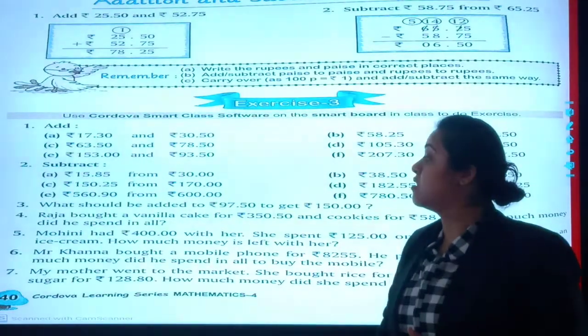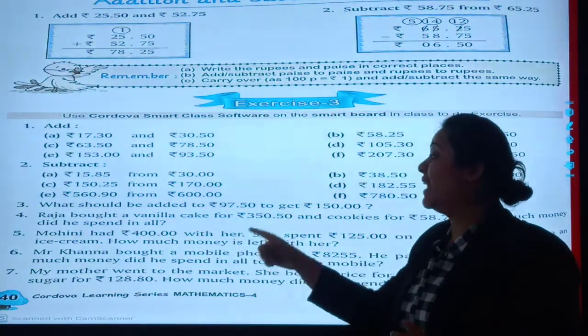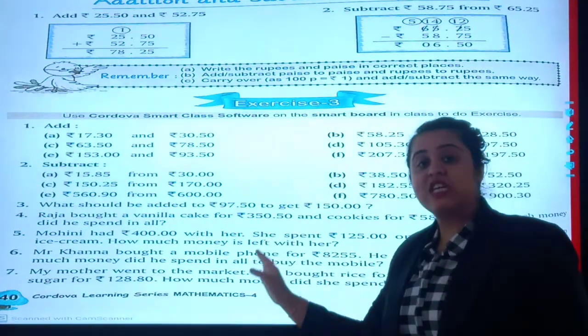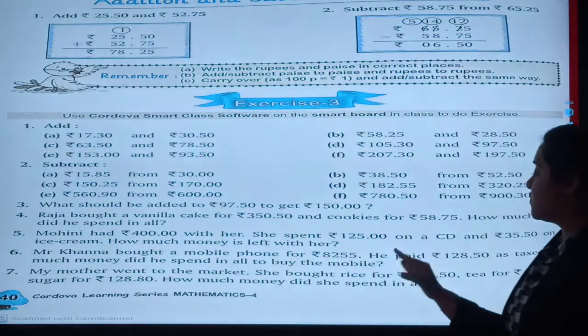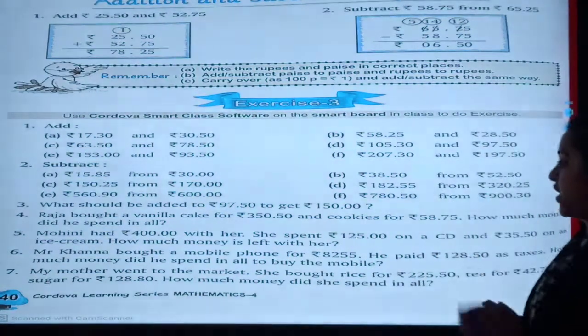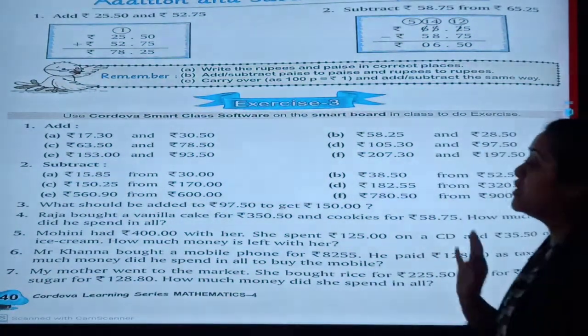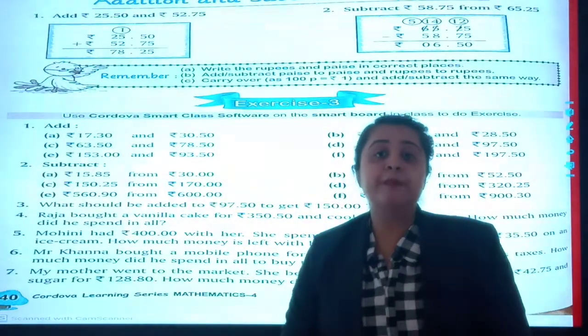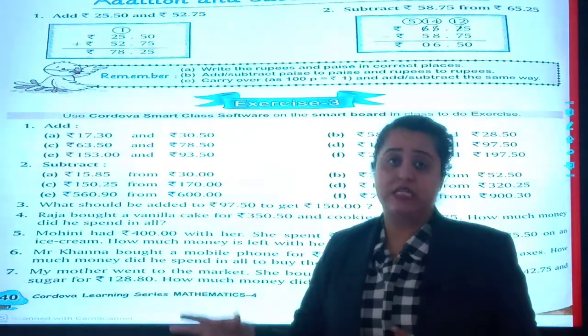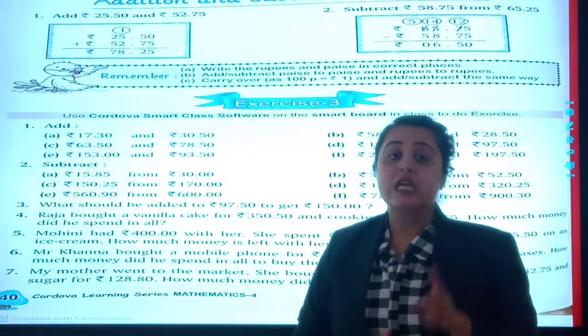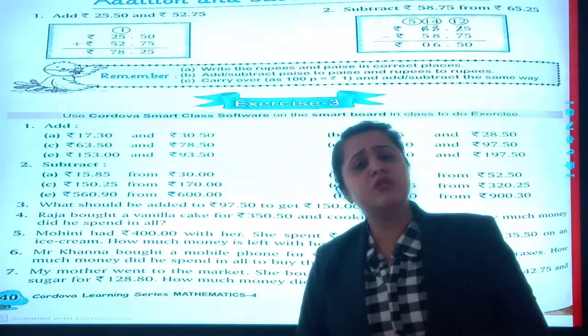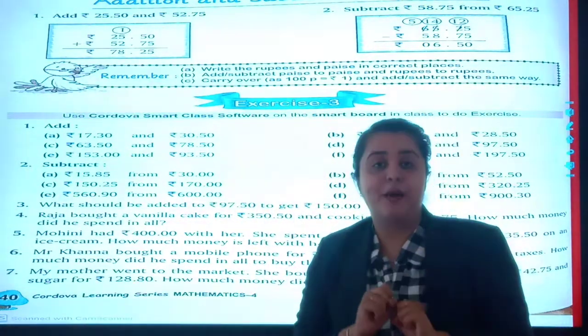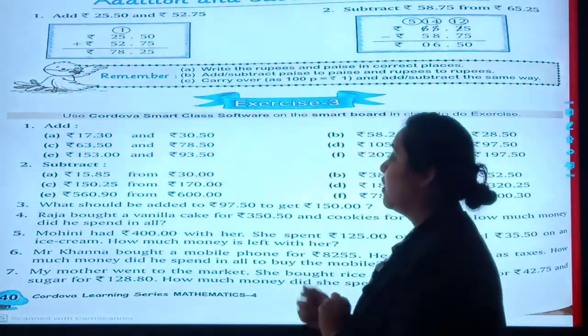Your question number 4 is: Raja bought some cake for rupees 350 and 50 paise, and cookies for 58 rupees and 75 paise. How much money did he spend in all? Whenever the question says 'spend in all' or 'in all', that means you are supposed to find the total. So what you will be doing? Yes, you will simply add the amount of cake and cookies.